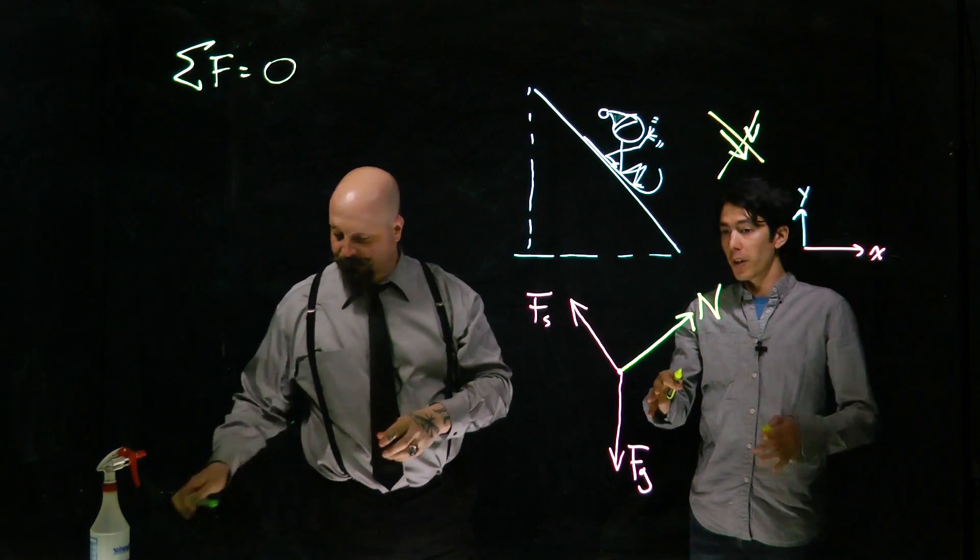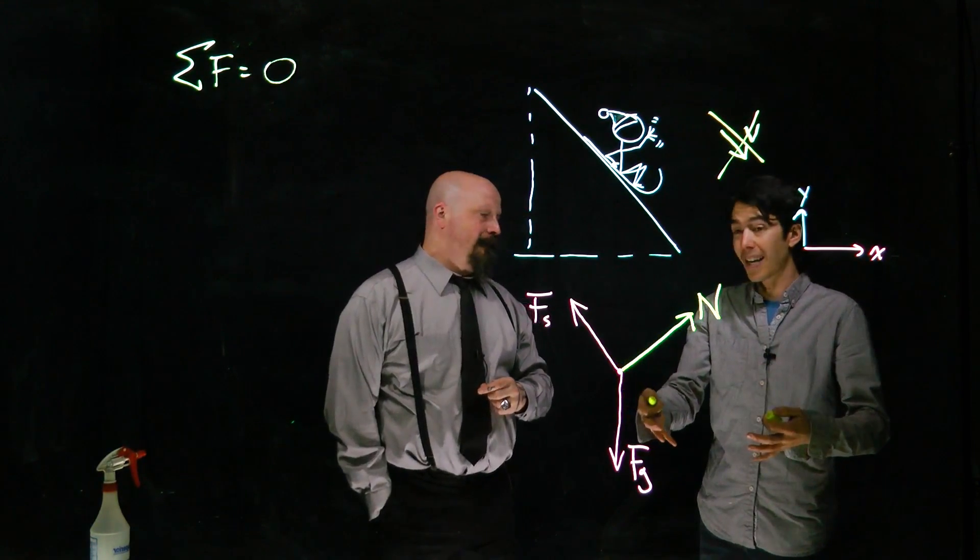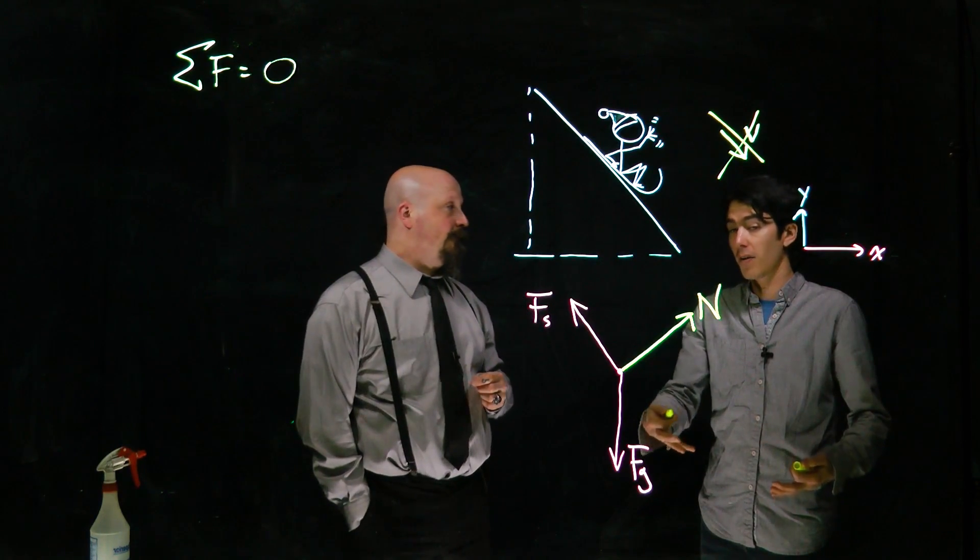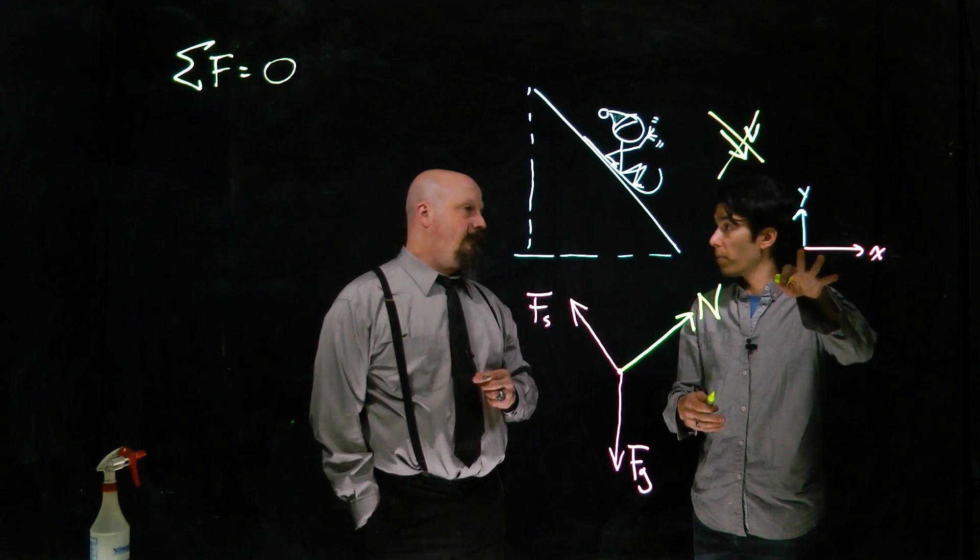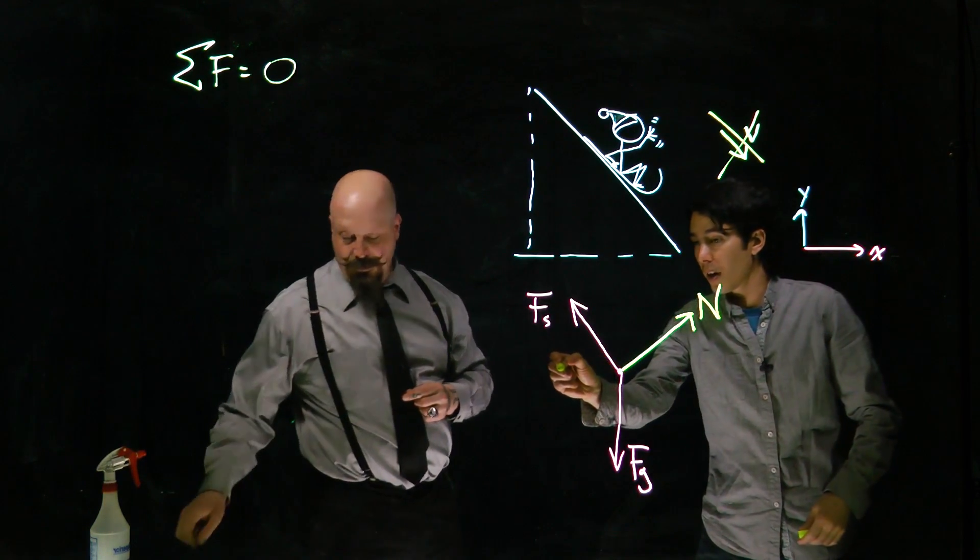Now, if we're going to do that, we can line things up tip to tail and those vectors will cancel out, but it's a lot more systematic and helpful to break things into components. We typically break problems into x and y, so let me draw dotted lines.